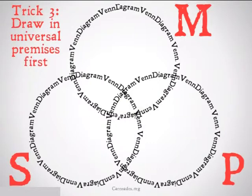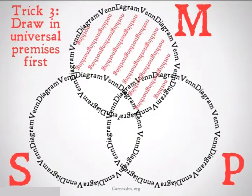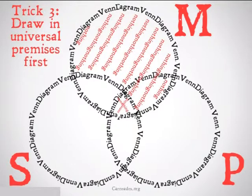Trick number three: always remember to draw in the universal premises first. I've said this before, but it's important because sometimes you may end up in a situation where you try to put the particular premise in somewhere, and then later find out that the universal premise doesn't allow that.